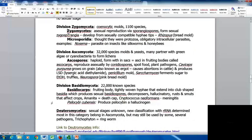In the division Basidiomycota, there are 22,000 known species. The basidiocarps have fruiting bodies with tightly woven hyphae that extend into club-shaped basidia producing sexual basidiospores. They're decomposers, hallucinatory, the rust and smuts affecting crops. An example is Amanita, the death cap mushroom. Cryptococcus neoformans is a pathogen causing meningitis. And Psilocybe cubensis produces psilocybin, which is a hallucinogen.